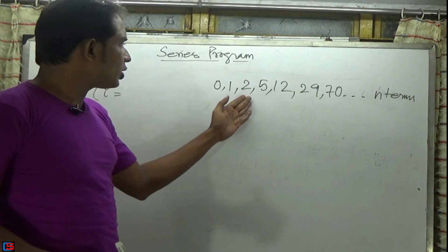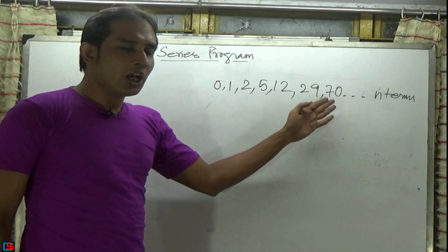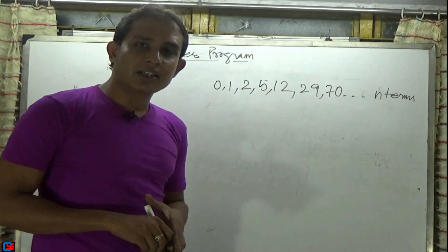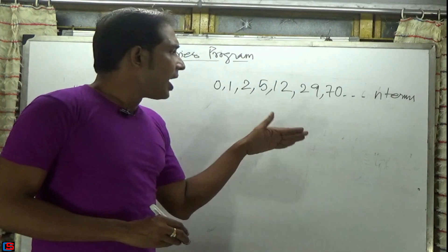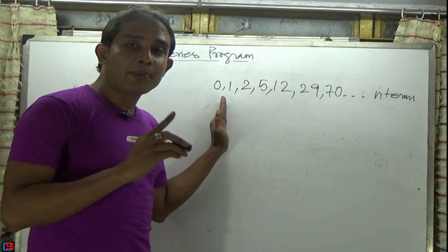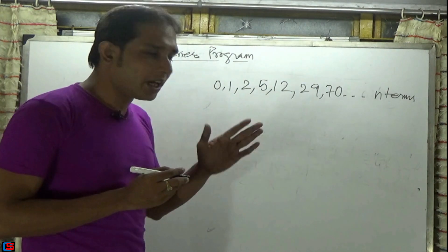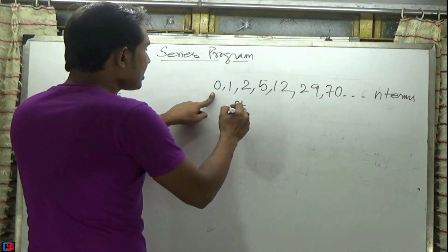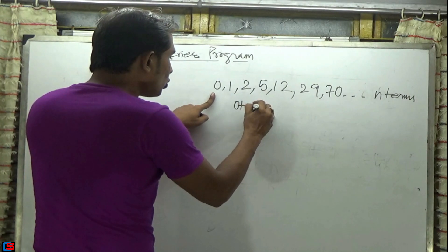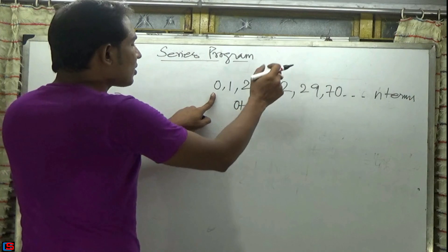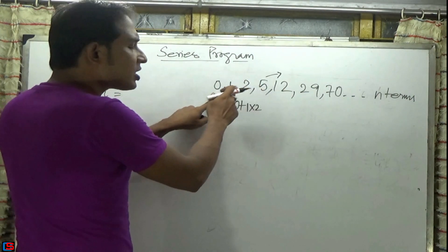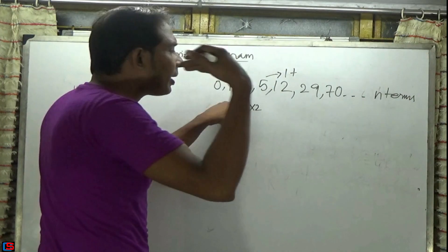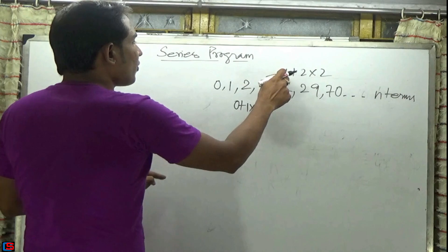Now we come to the next series: 0, 1, 2, 5, 12, 29, and 70. This series is known as the Pell series. In this Pell series, the next term is generated by adding the first previous value with twice the second value. So 2 is generated by 0 plus 1 into 2, which equals 2. For 5, the previous two values are 1 and 2, so 2 into 2 equals 4, plus 1 equals 5.